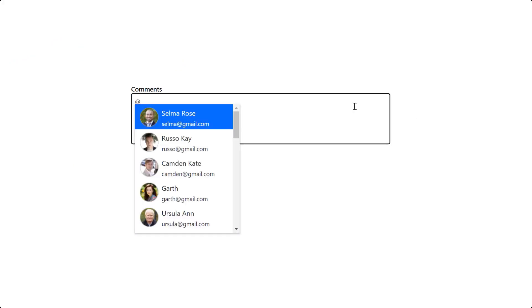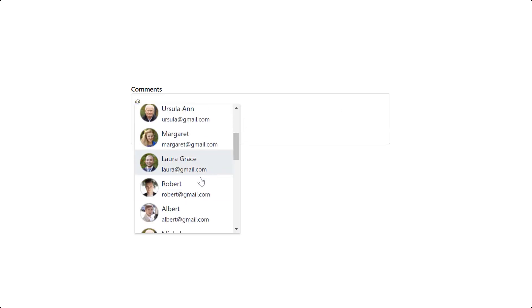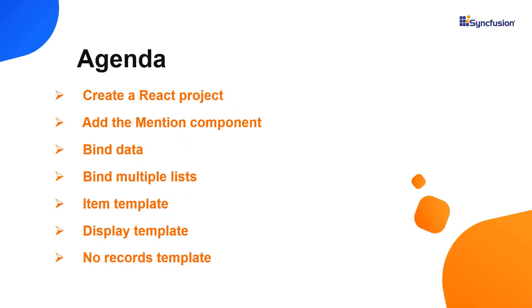Using the React Mention component, you can display auto suggestions when you type the at-mention character on any editable HTML elements like Rich Text Editor, text area, text box, and any input elements. I will show you how to configure a few of its basic features like data binding, displaying multiple suggestion lists, and templates.